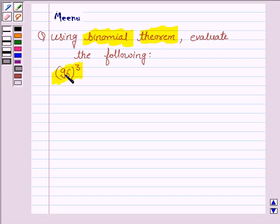To evaluate 96 to the power 3, we need to know the expansion of (a - b) to the power n.